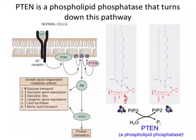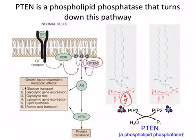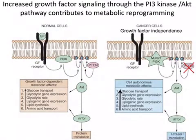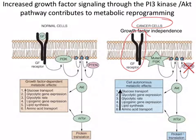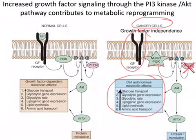The PTEN phospholipid phosphatase is the brakes on this growth factor pathway. PTEN catalyzes the hydrolysis of the phosphate that PI3 kinase added, removing it and returning the phospholipid to PIP2 so that it no longer activates AKT. Most cancer cells have mutations that upregulate this pathway — either amplification or ligand-independent activation of the growth factor receptor, constitutively activating mutations in PI3 kinase, or inactivation of PTEN, removing the brakes from the system. The result is cancer cells with a highly proliferative metabolic phenotype.